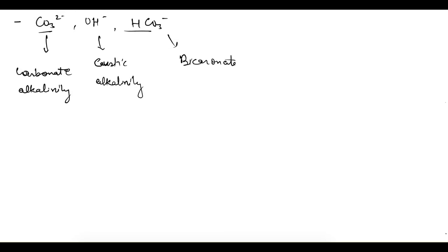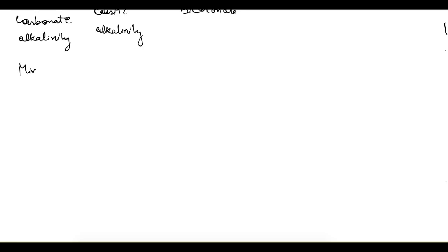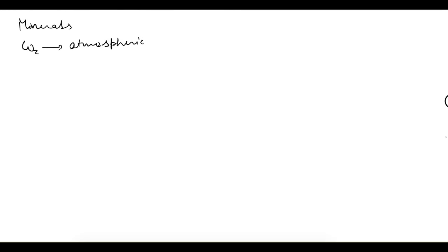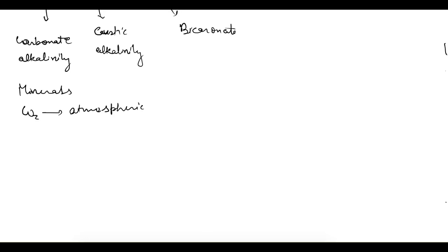The source of these carbonate and bicarbonate ions basically occurs due to a few reasons: if minerals are present in water it becomes alkaline, or due to atmospheric CO₂ it can become alkaline, or if algae is present in water it also becomes alkaline. Now let's look at the reactions that take place.